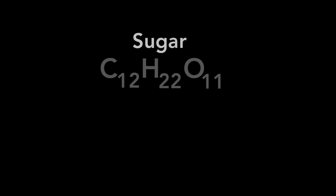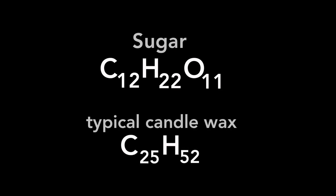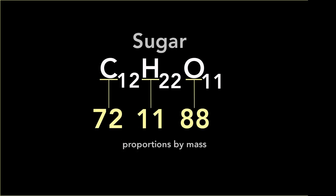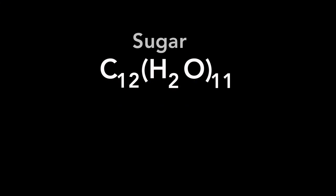Let us consider sugar, which will serve my purpose. It is a compound of carbon, hydrogen, and oxygen, similar to a candle, as containing the same elements, although not in the same proportion. This is indeed a very curious thing, which you can well remember. For the oxygen and hydrogen are in exactly the proportions which form water, so that sugar may be said to be compounded of 72 parts of carbon and 99 parts of water.